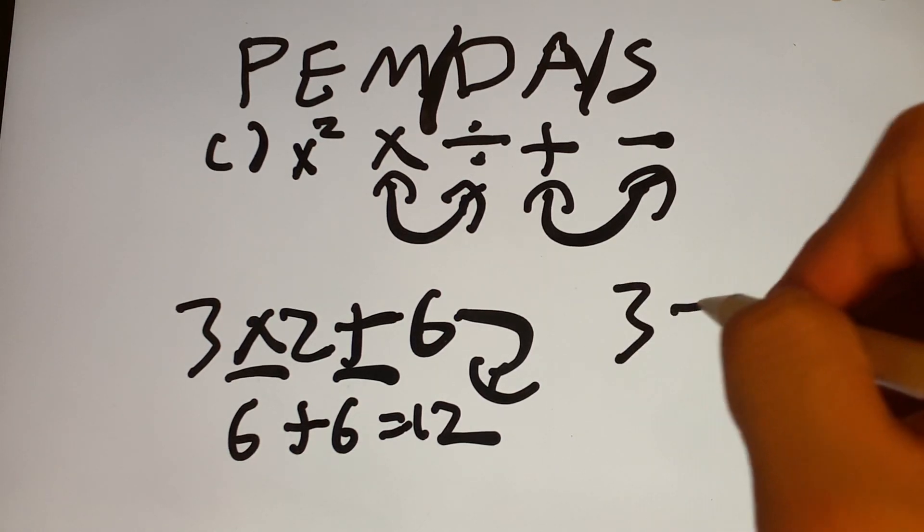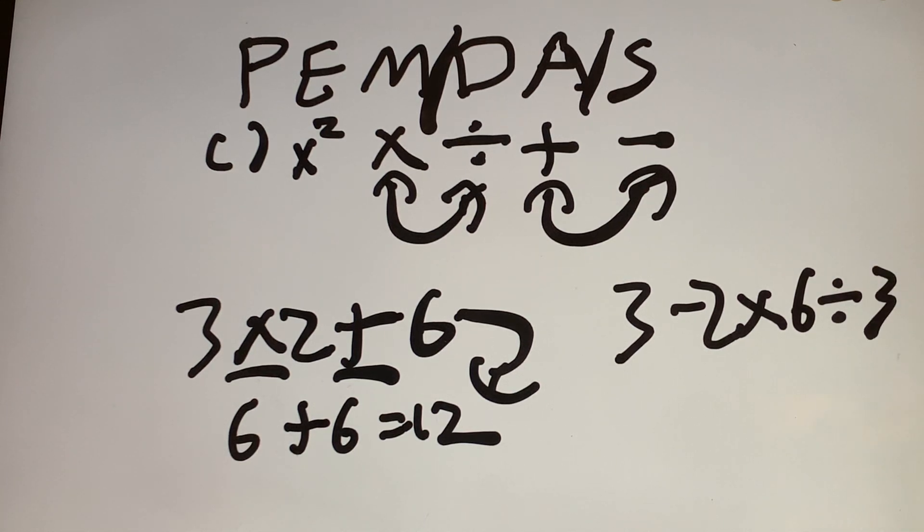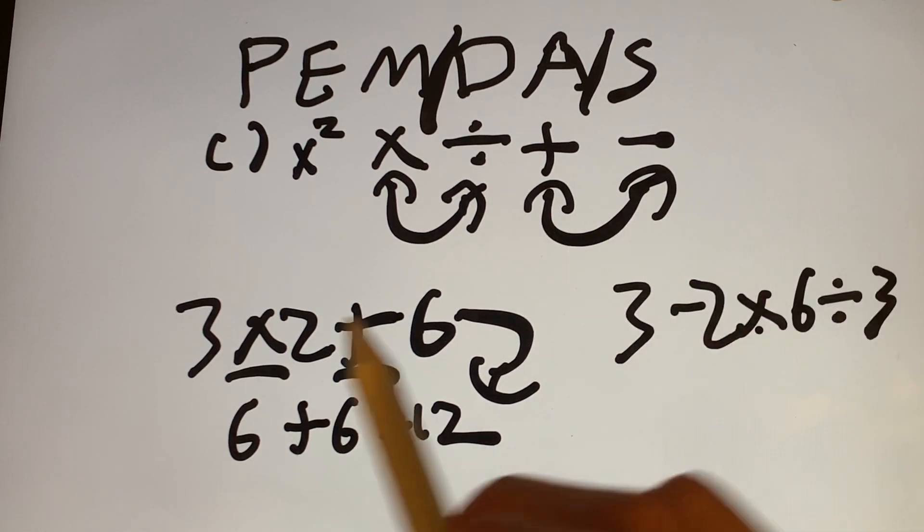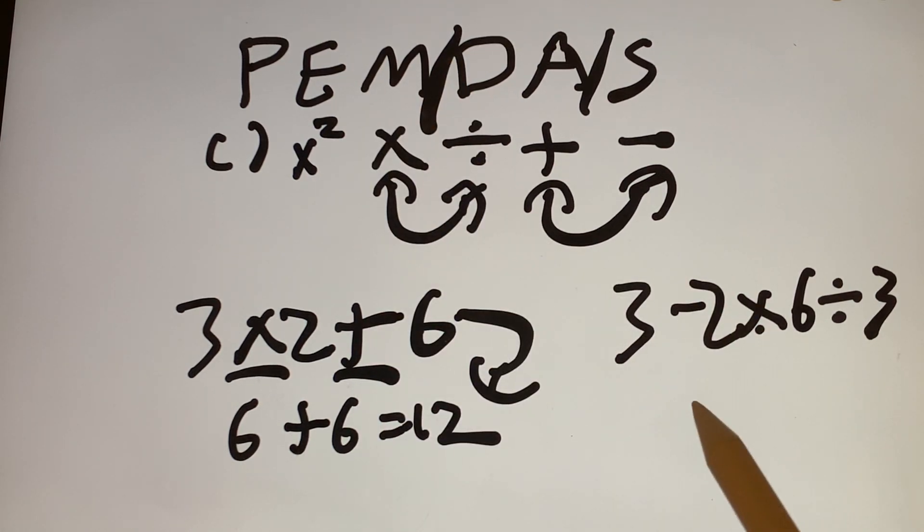So let's try another one. What if it's 3 minus 2 times 6 divided by 3? So the first thing you're going to do is see what comes first. We see subtraction, multiplication, and division. Well, looking at this, we have multiplication and division. So which one comes first? We read it from left to right.